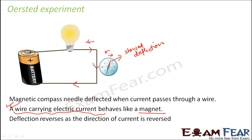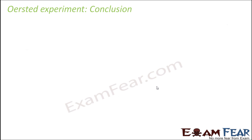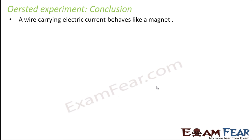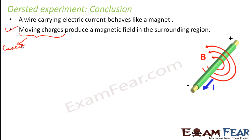So this experiment very clearly proved how a current-carrying conductor behaves like a magnet. From here came the concept of the magnetic effect of current — that an electric current flowing through a conductor can produce magnetic effects. If this is a current-carrying conductor, as current flows through it, a magnetic field is established in the surrounding region. The conclusion of the Oersted experiment was that a wire carrying electric current behaves like a magnet, and moving charges — which constitute the current — produce a magnetic field in the surrounding region.